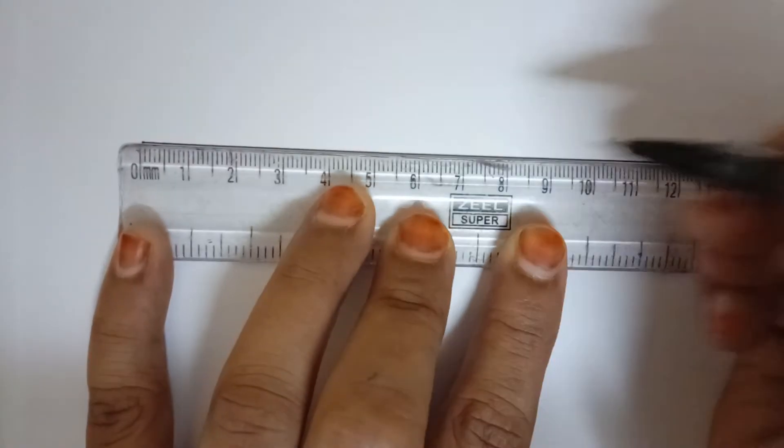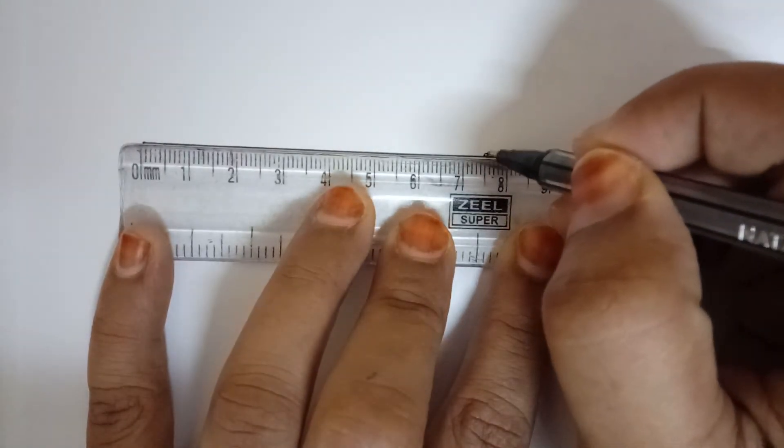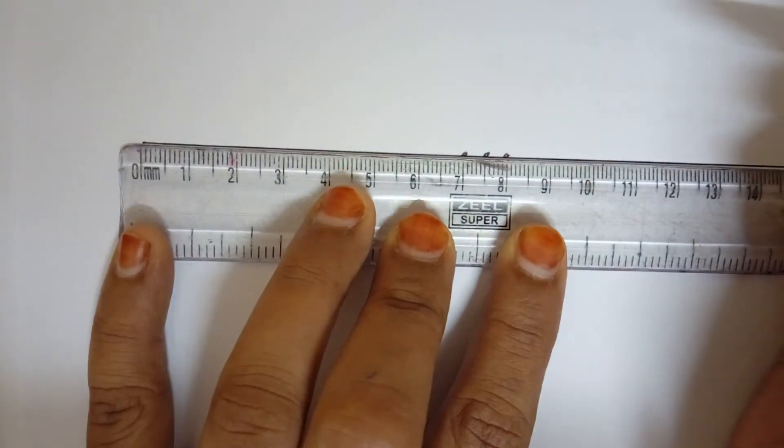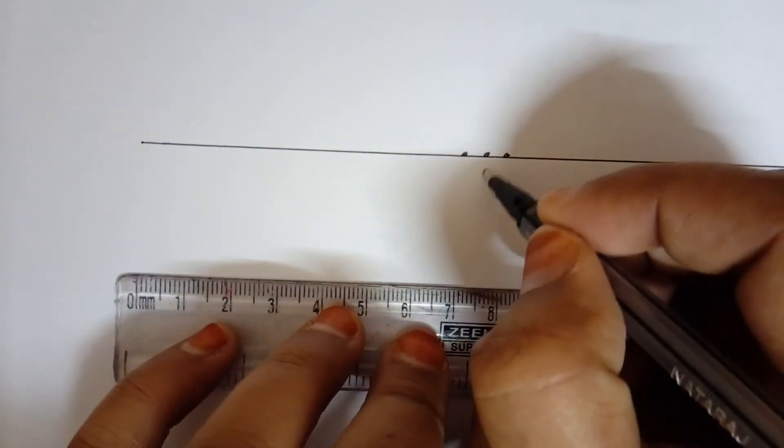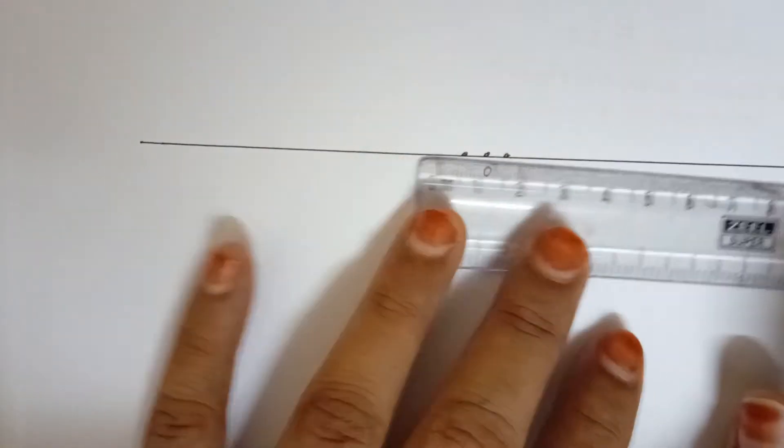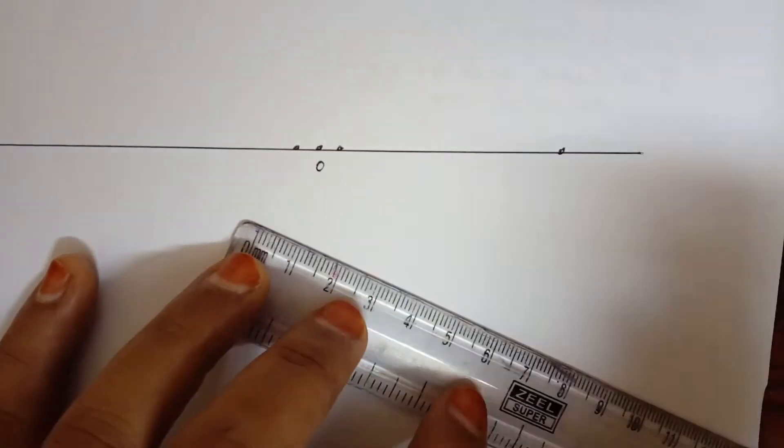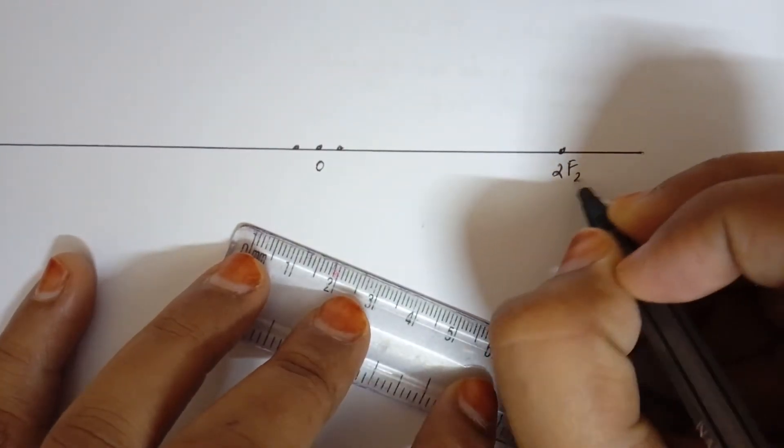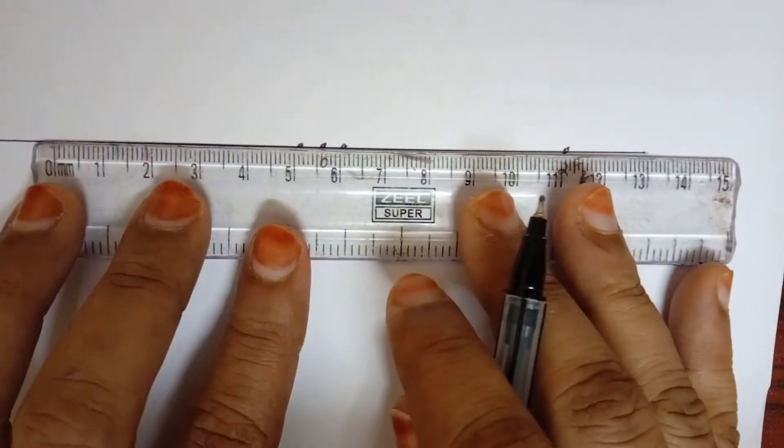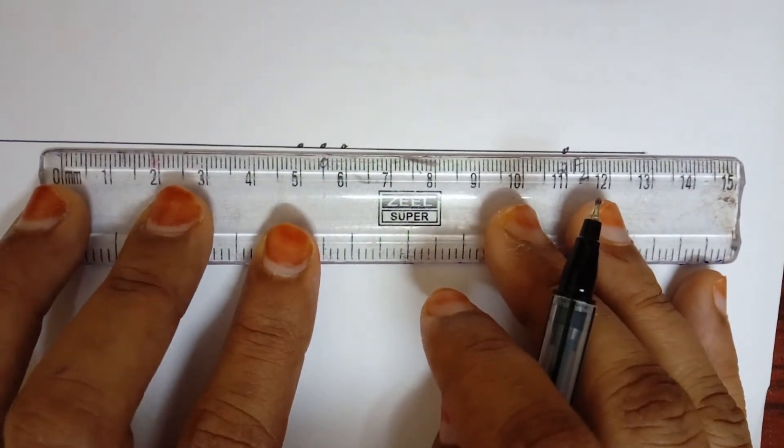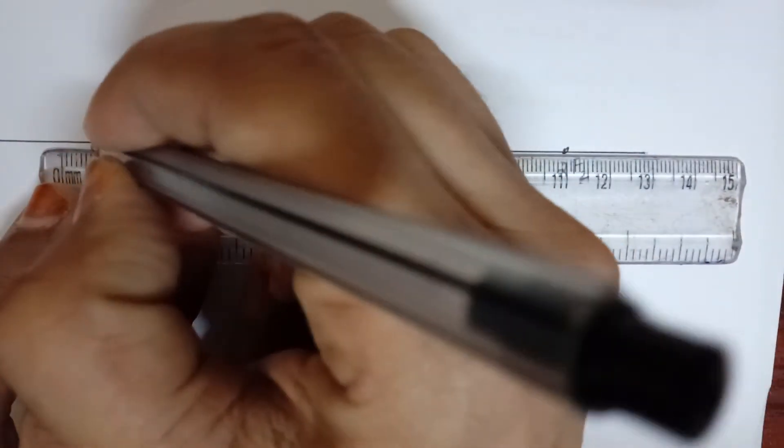Mark the midpoint. Midpoint is 7.5 centimeter. Half centimeter on this side, half centimeter on this side. This is going to be O. From the first point I'm going to mark six centimeters over here and name it as 2F2. Then from the second point, I'm going to mark six centimeters on this side and name it as 2F1.